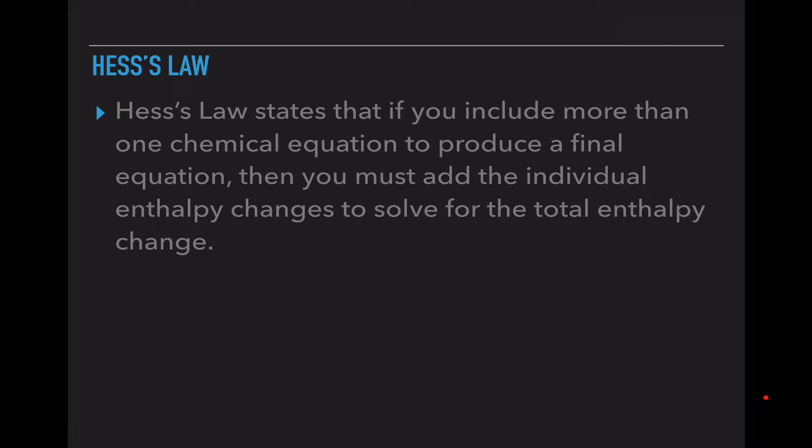Hess's Law states that if you include more than one chemical equation to produce some final equation, then you must add the individual enthalpy changes to solve for the total enthalpy change. Essentially what it's telling us is that if we take multiple steps to get to our final goal, we have to include the total heat changes of each individual step on the way to that final goal.